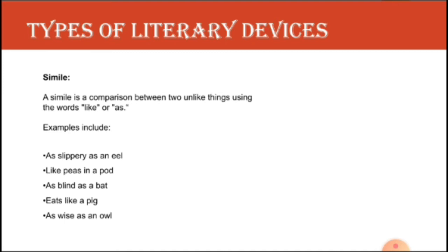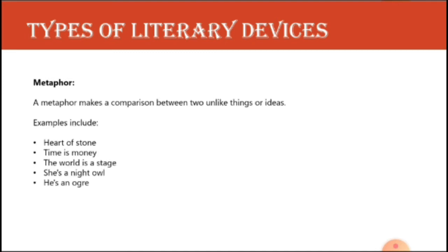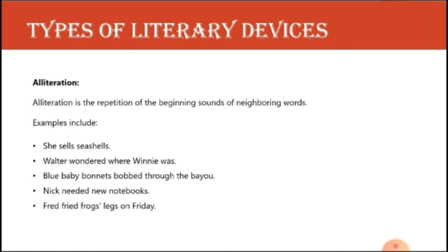The next one is metaphor. A metaphor makes a comparison between two unlike things or ideas but it is a direct comparison. In a simile, the words 'like' and 'as' are used, but in metaphor there are no such words — we just directly compare two things. For example, 'heart of stone' means your heart turns into stone, though there is no real connection. 'Time is money' and 'she is a night owl' are examples where two things are directly compared.